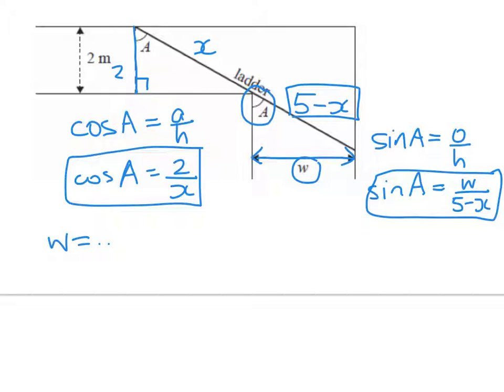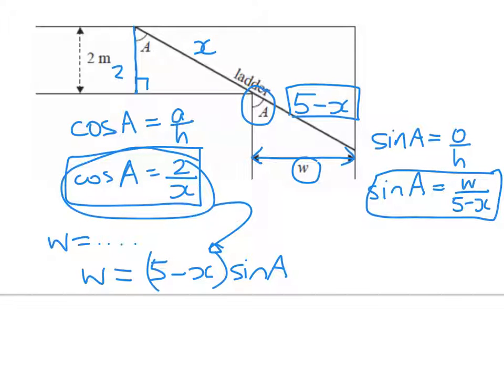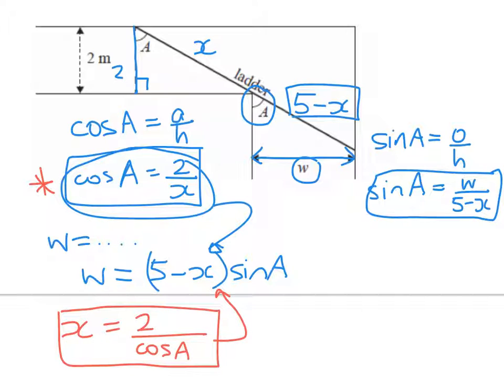Well, remember we said we'd like to get w equals blah blah blah. Now we've got something with x's and a's in it. So let's try and see if we can... Let's write w. w is equal to 5 minus x times sine a. Now, we've got two variables in there. We can't have that because we're in year 13 and we just need one variable to differentiate. So it would be very nice if we could do something with this to substitute into here. And that's what we're going to do now. We're going to rewrite this to get x is equal to 2 over cos a. Now we're going to take that and we're going to substitute that into here. So we get w is equal to 5 minus 2 over cos a sine a.